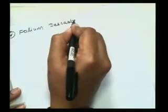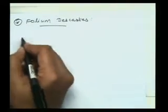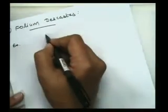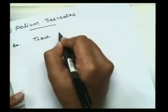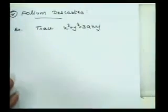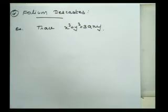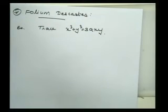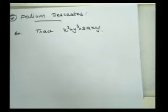Now we will discuss the folium of Descartes. First, we discuss symmetry. The equation is x³ + y³ = 3axy. There is no change in the equation if x and y are interchanged, so the curve is symmetric about the line y = x.